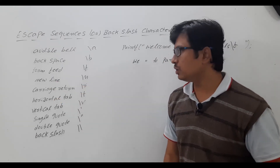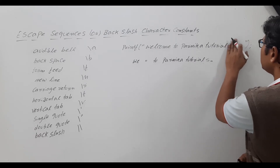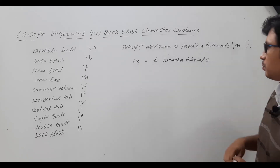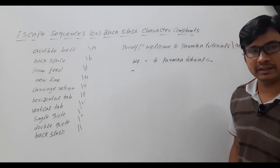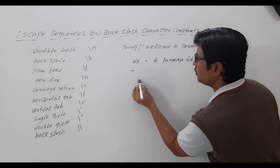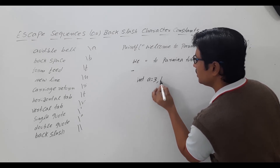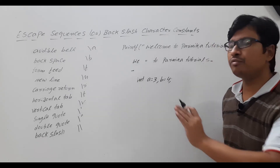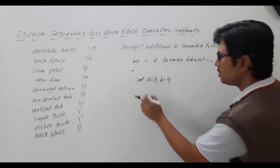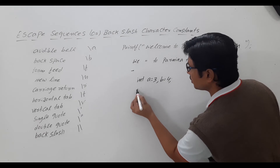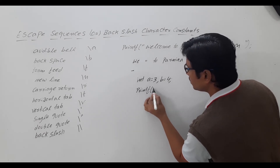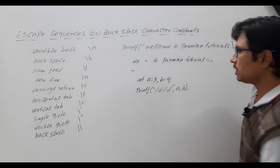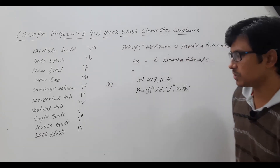Now let me discuss the new line character, which is backslash N. If you write 'welcome to Parnika Tutorials' followed by backslash N, it will print the entire output and the cursor will point to the next line. For example, if you have int a = 3 and b = 4, and you write printf("%d %d", a, b), the output will print as 3, 4 with no space between them — it prints as 34.